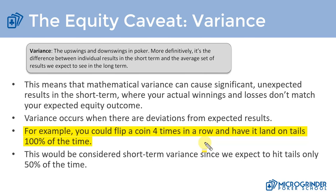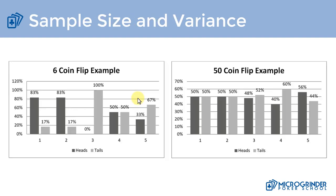We typically call this short-term variance because it's magnified in the short term, but in the long term it actually starts to dissipate. I used online coin-flipping software and did five different samples of a six-coin flip, recording the percentages landing on heads and tails. I also did a sample with a 50-coin flip. We can equate this to our stereotypical coin flip situation in poker — ace king versus pocket queens — which is very close to 50/50, being 45 versus 55.